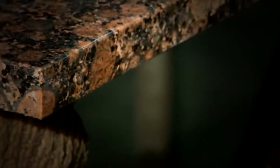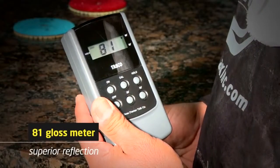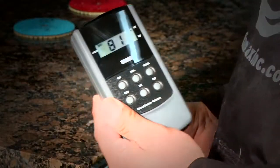This system will give you any degree of polish you're looking for. You can even see the reflection of the yellow hose in the edge. 81 on the gloss meter. Unprecedented.